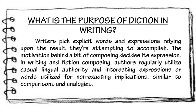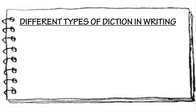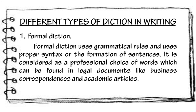Now we have the different types of diction in writing. The first type is formal diction. Formal diction uses grammatical rules and proper syntax or formation of sentences. It is considered a professional choice of words, which can be found in legal documents like business correspondences and academic articles. In other words, formal diction is the use of sophisticated language.